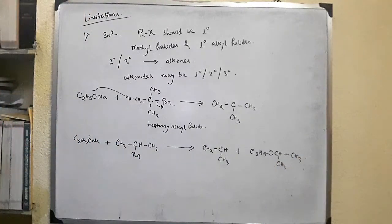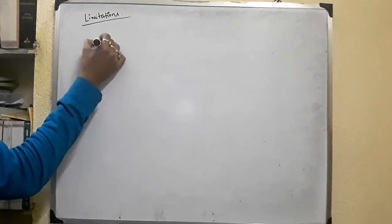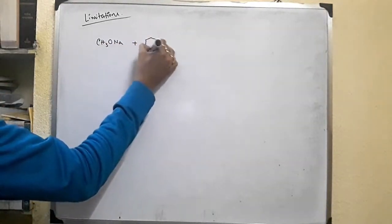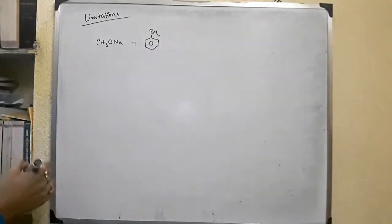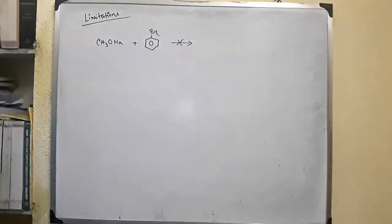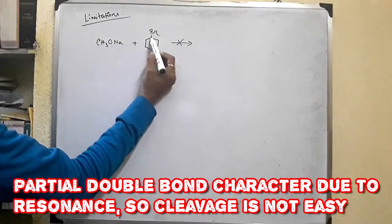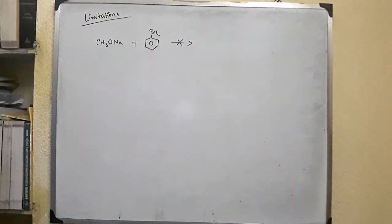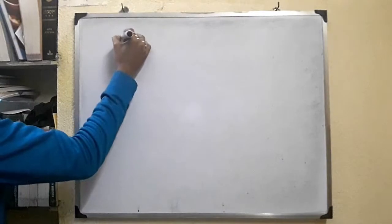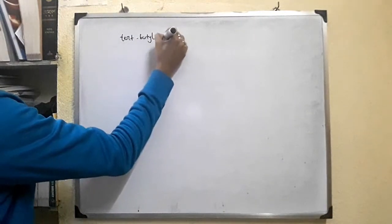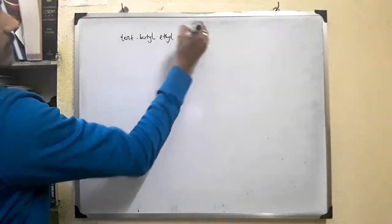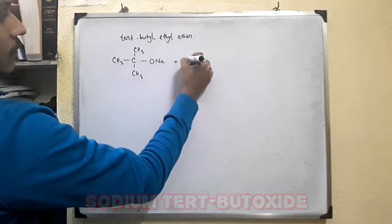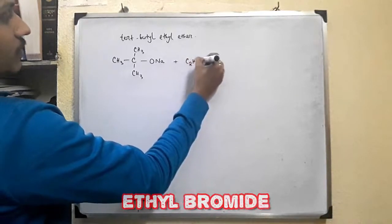Similarly, in preparing phenolic ethers, if you take sodium methoxide plus an aryl halide — the aryl bromide — there will be no reaction. Due to resonance, there is a double bond character between the carbon and halogen, and it is not easy to break this bond, so no reaction occurs.